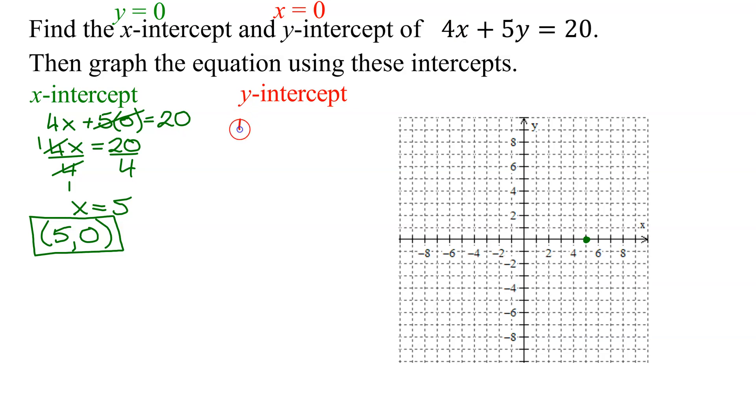So I'm going to get 4 times 0 plus 5y equals 20. Well, 4 times 0 is 0, so I'm just going to get 5y equals 20. To get y by itself, divide both sides by 5. And the 5's reduce, so I just get y equals 20 divided by 5 is 4. So my y-intercept has the ordered pair of x equals 0, y equals 4.